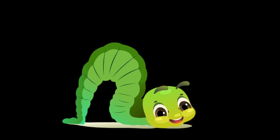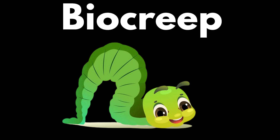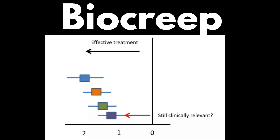Another interesting concept in non-inferiority trials is bio-creep. This is where each successive product in a series of non-inferiority trials may be a little bit less effective than the previous product. It's like a game of telephone, but with medical treatments. Let's illustrate this with an example.